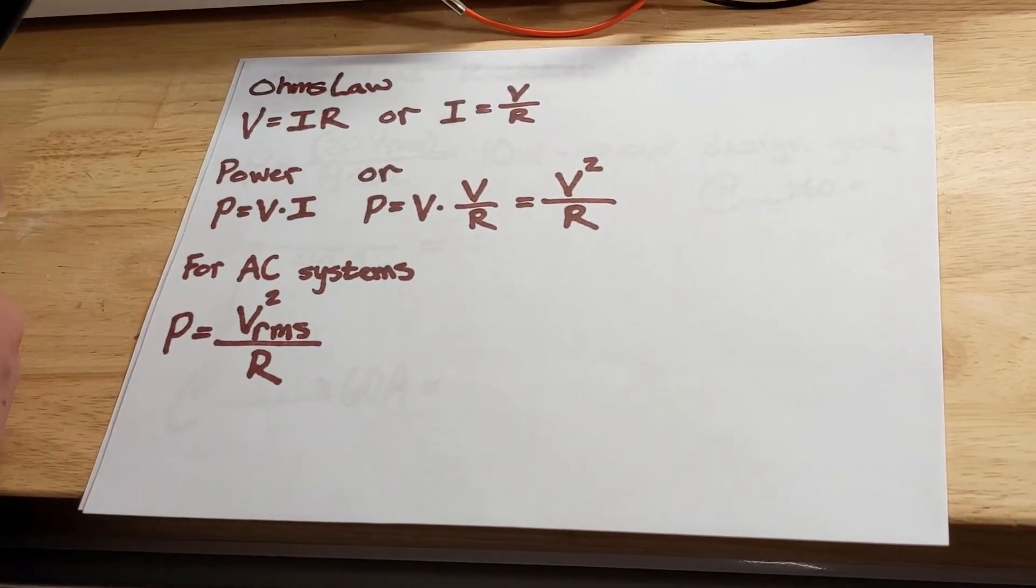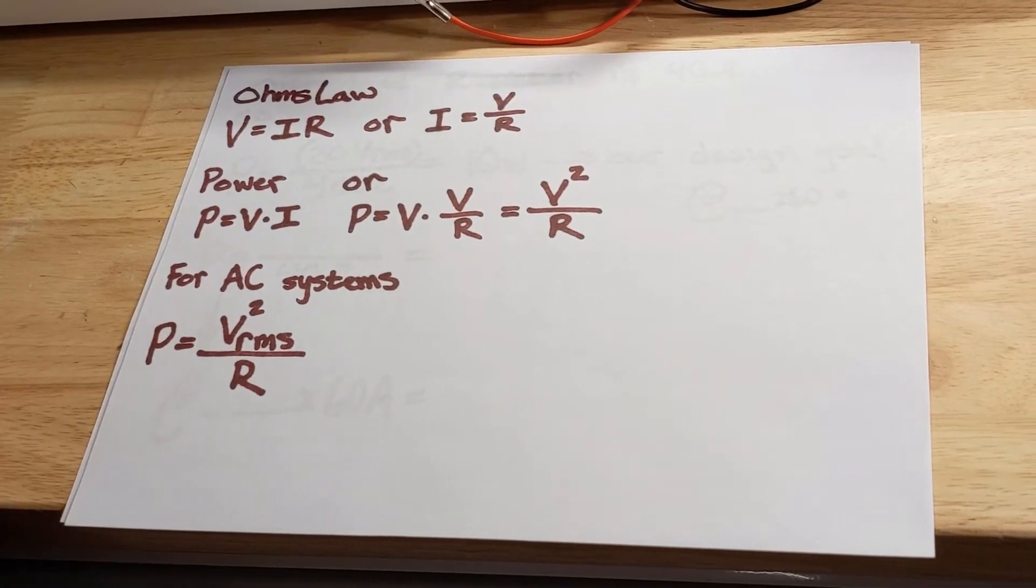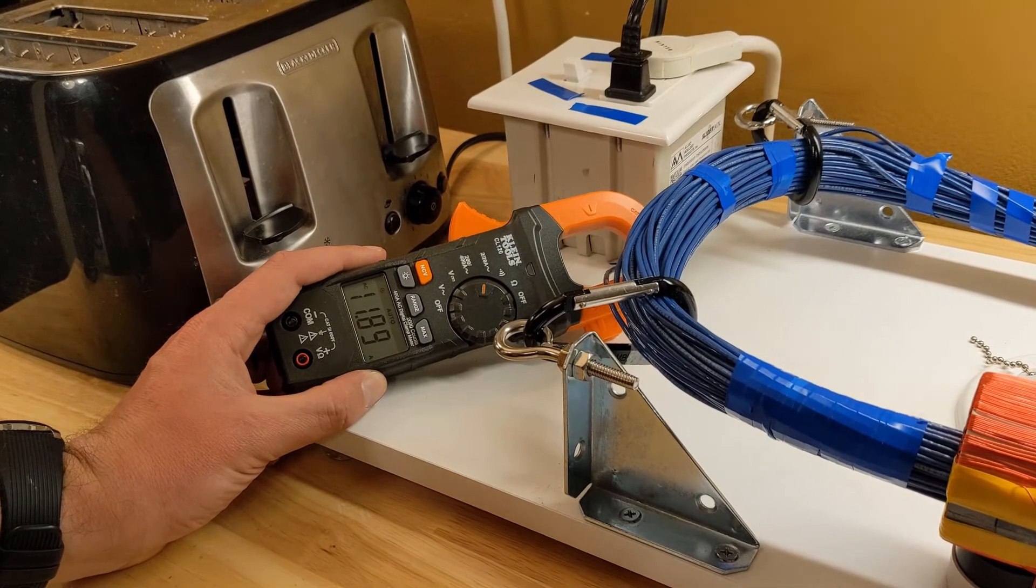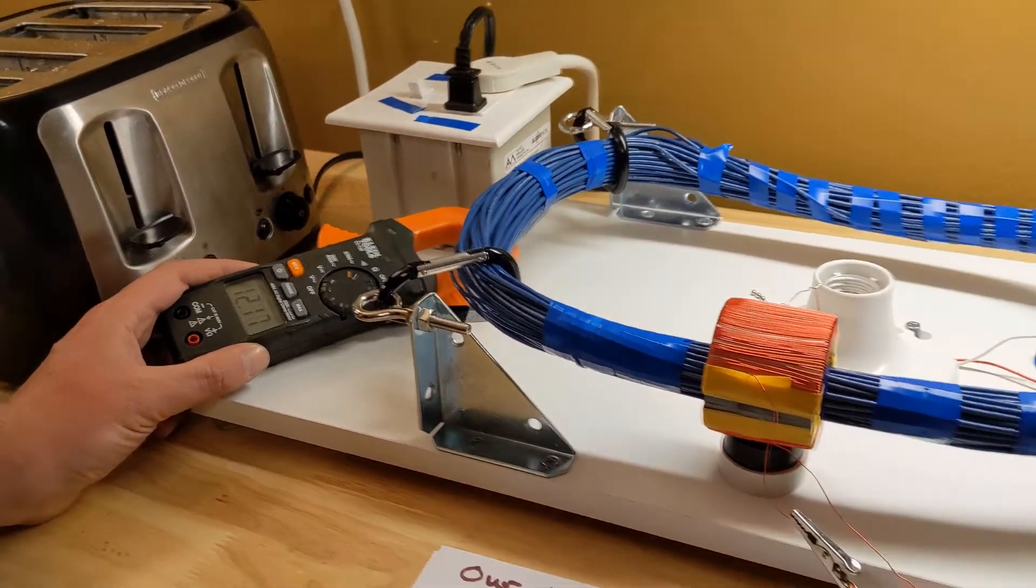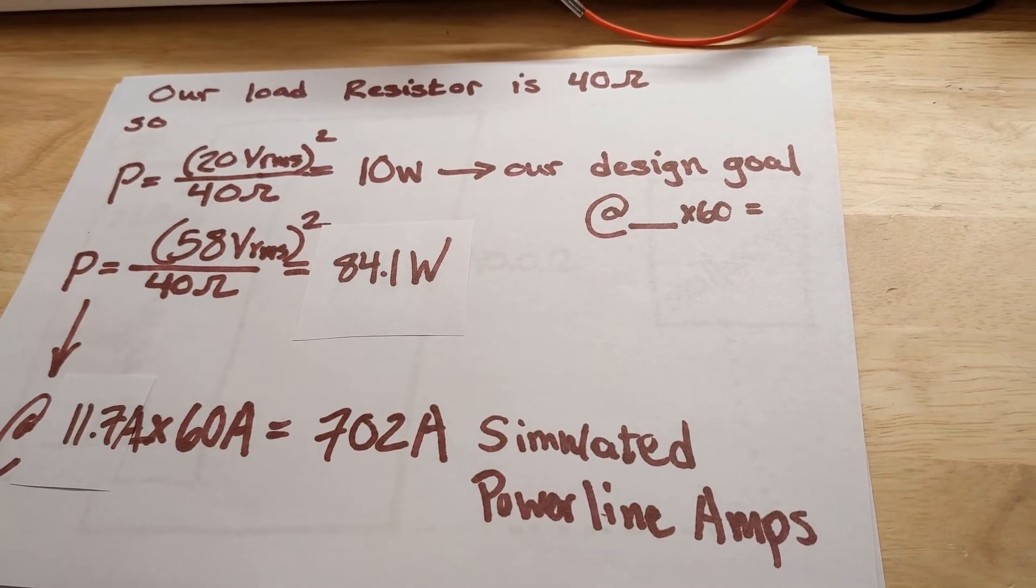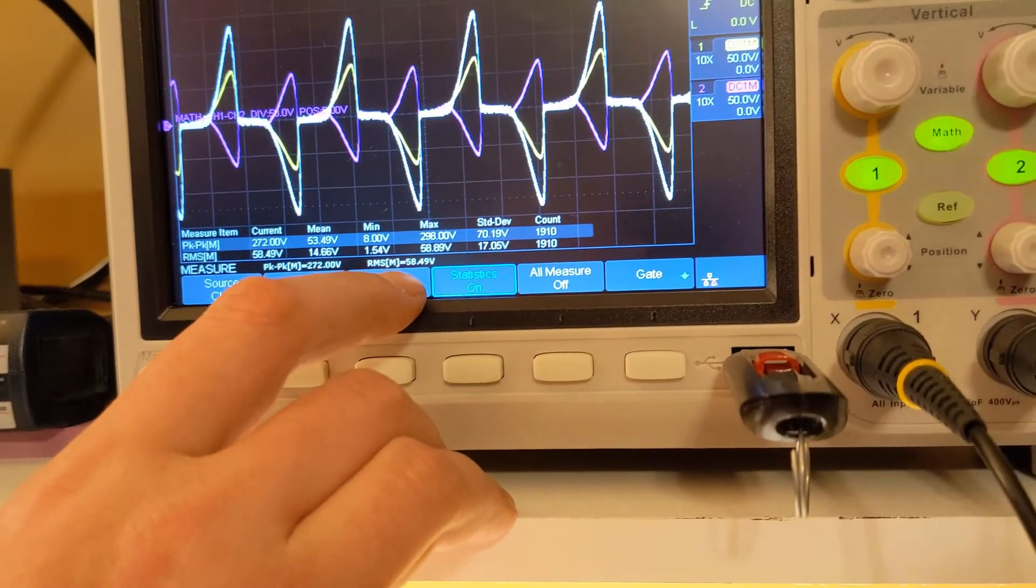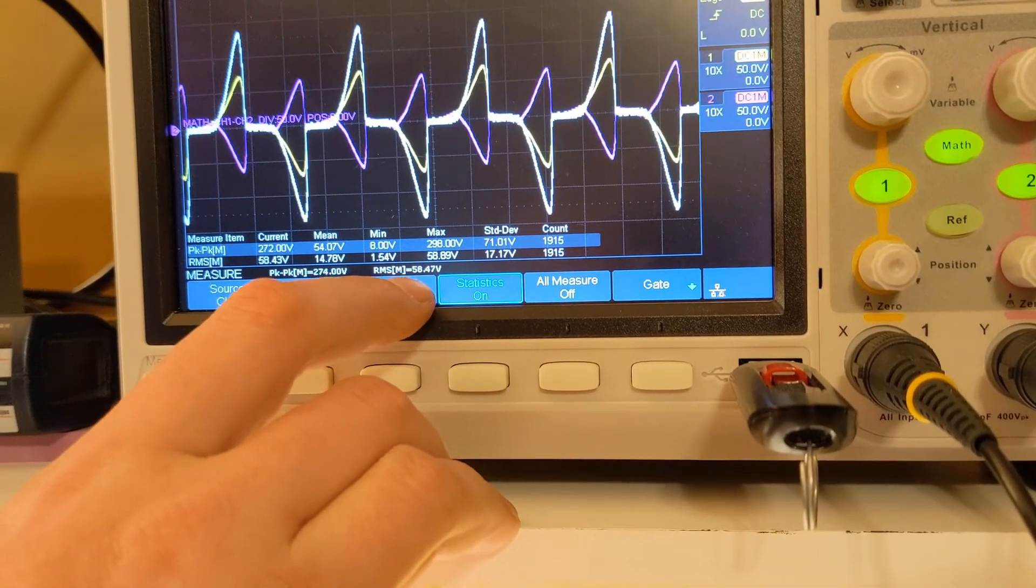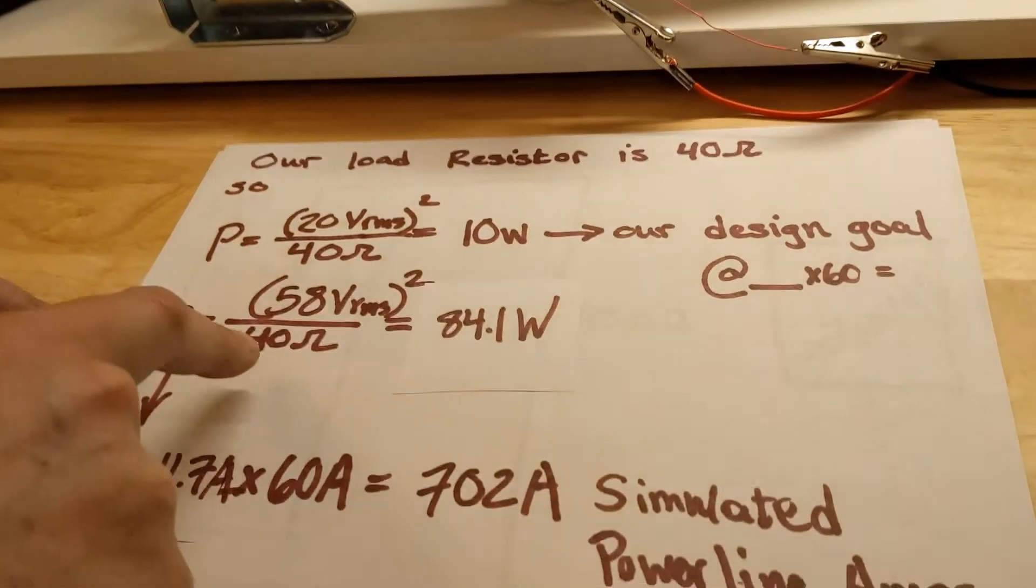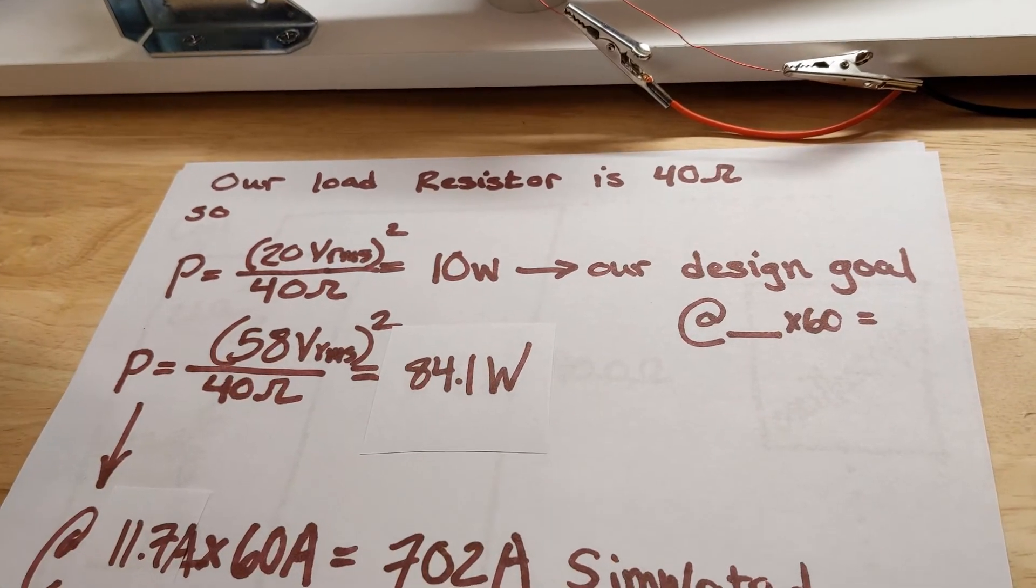Because this is an AC system, we have to use the root mean squared voltage instead of just regular voltage. Right now we're pulling around 11.8, 11.7 amps. If we do our math with our multiplier, that gives us 702 simulated power line amps. If we look, we have 58 volts root mean squared, with 272 peak to peak. When we calculate our power out of that, we have 84.1 watts coming out of the coil.